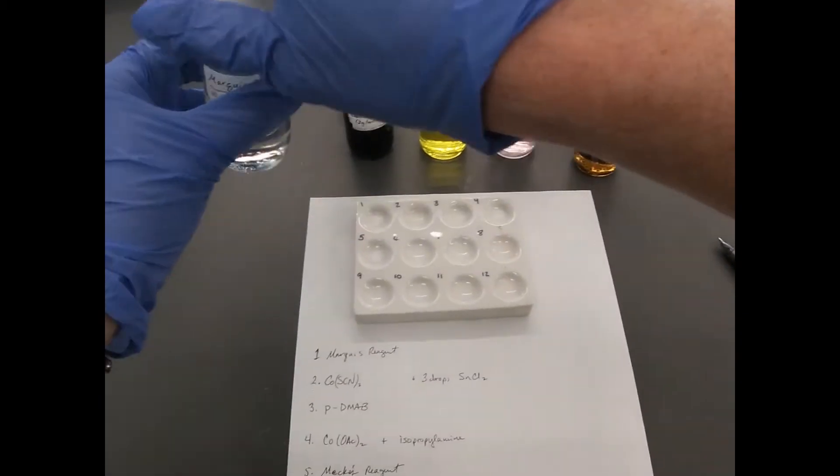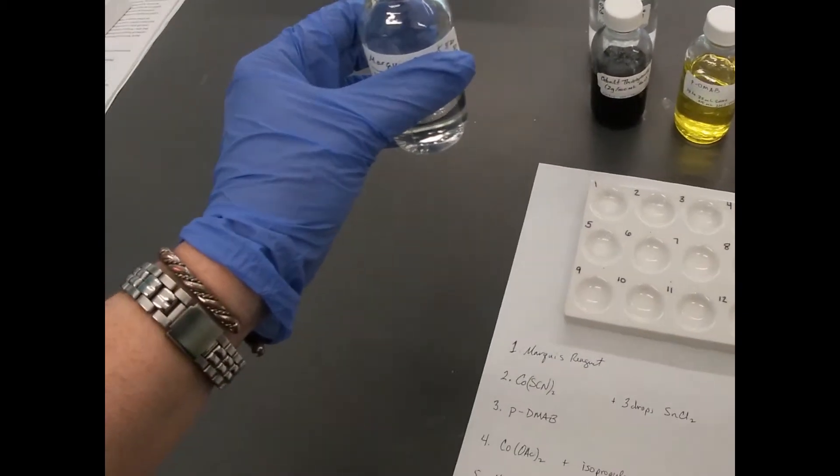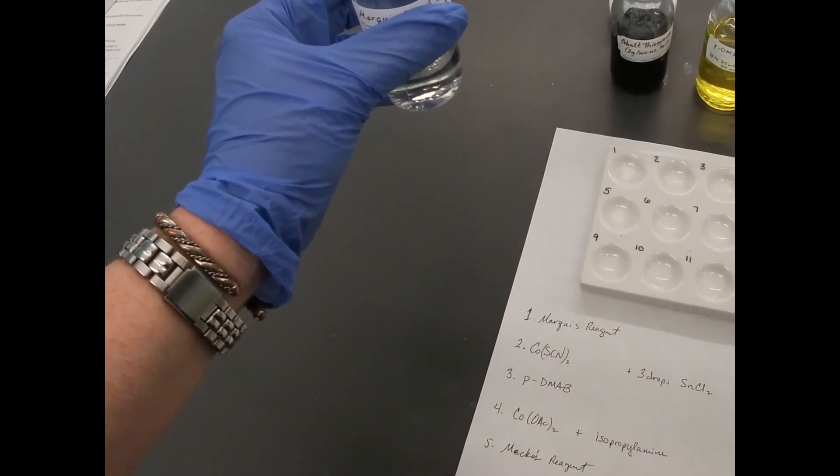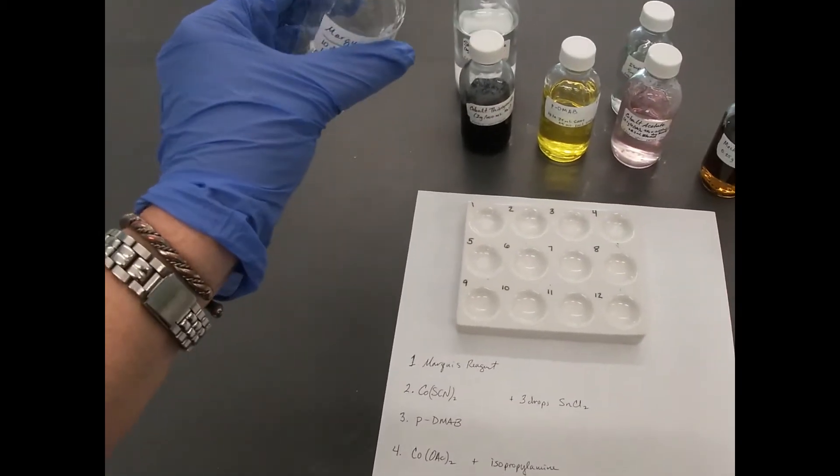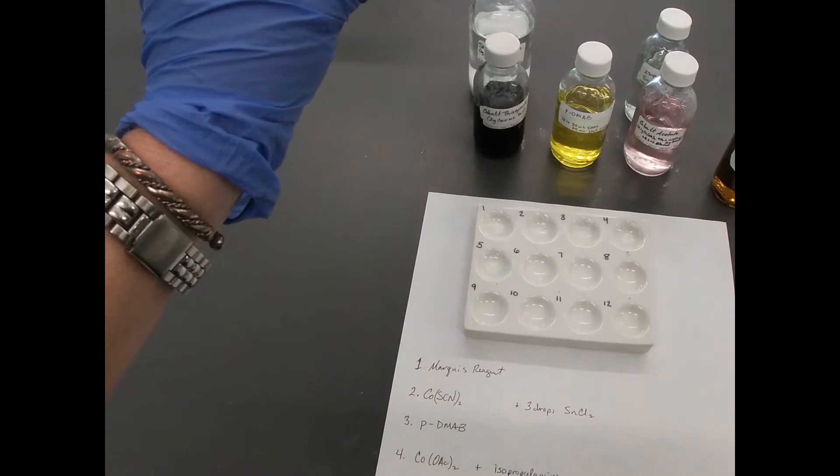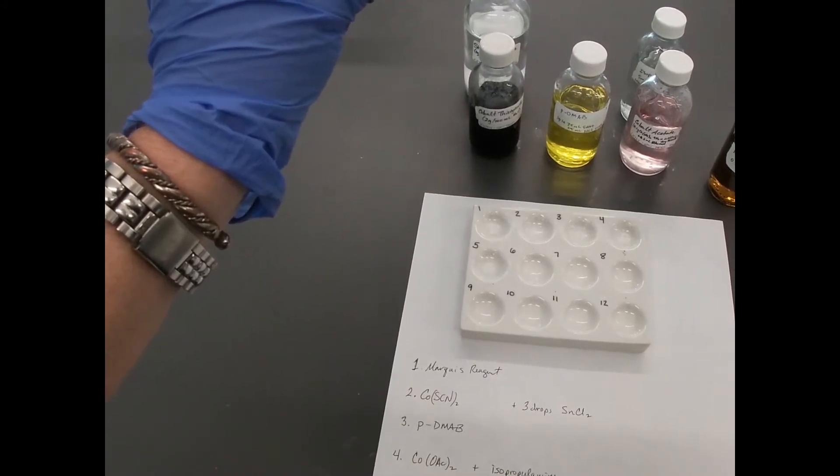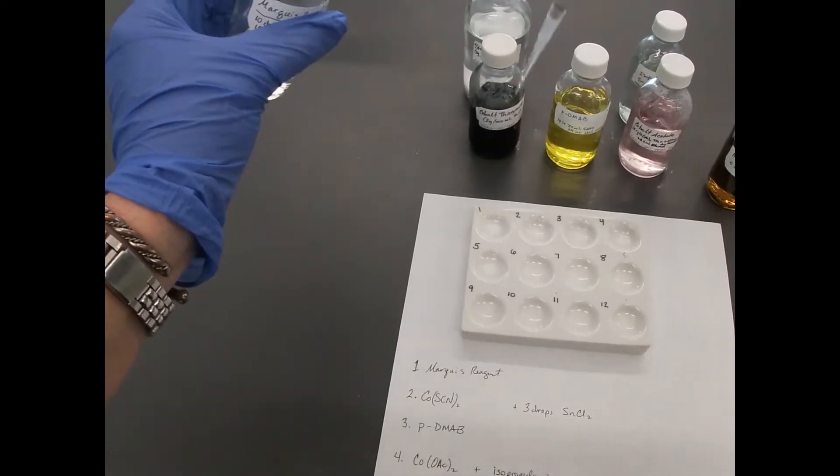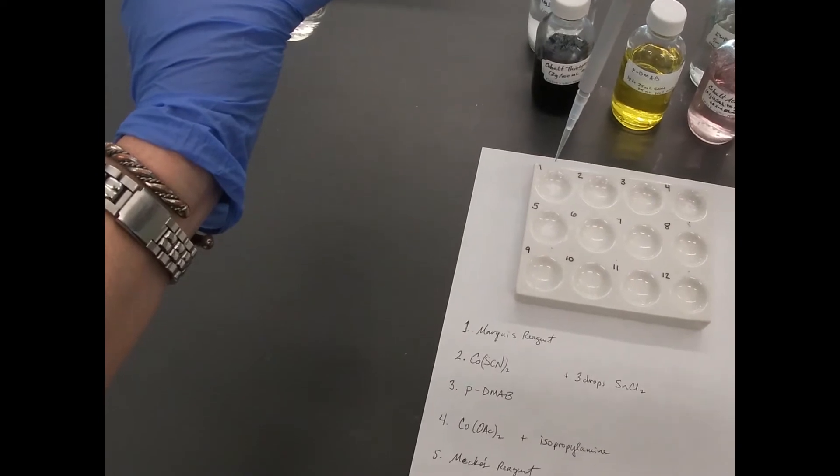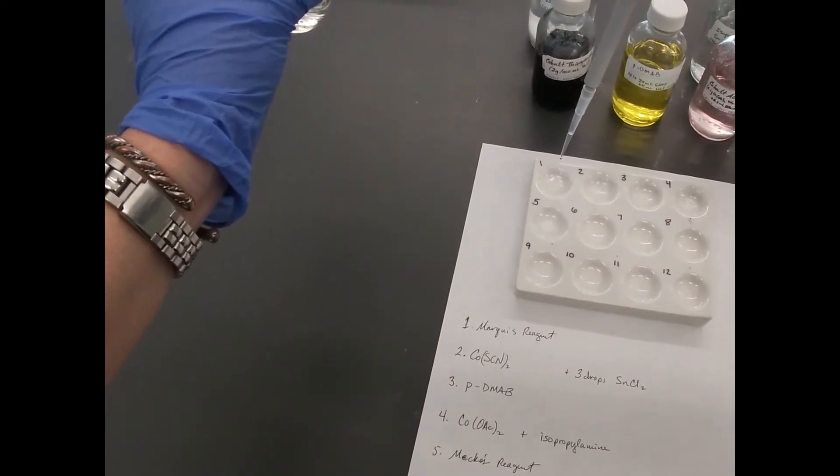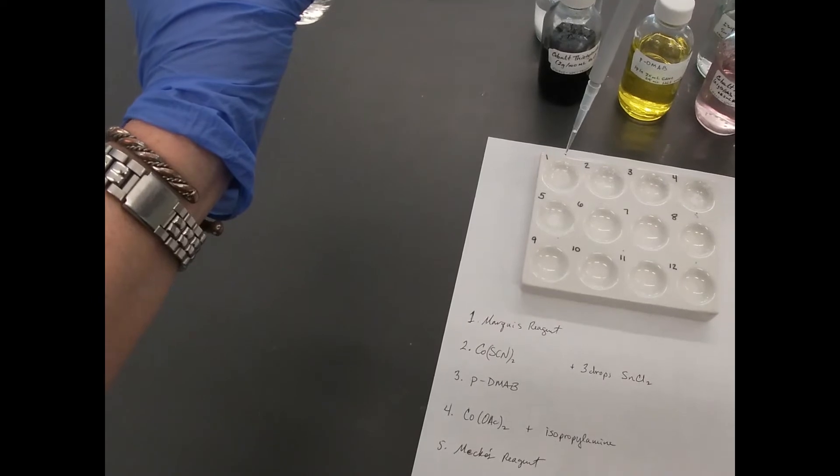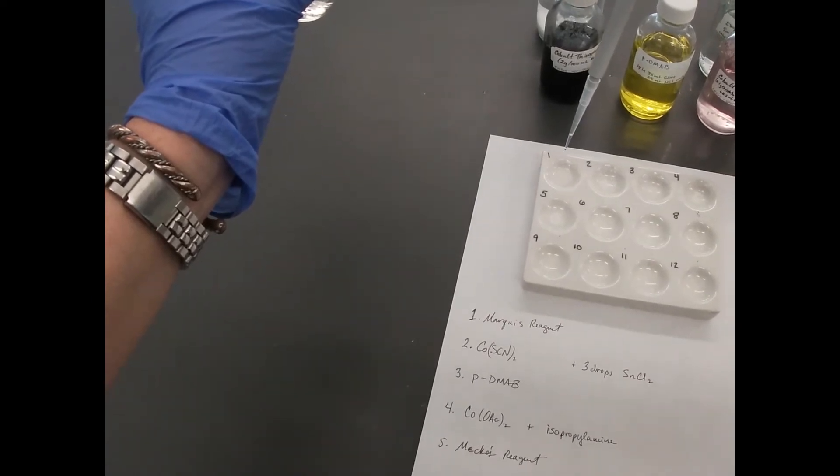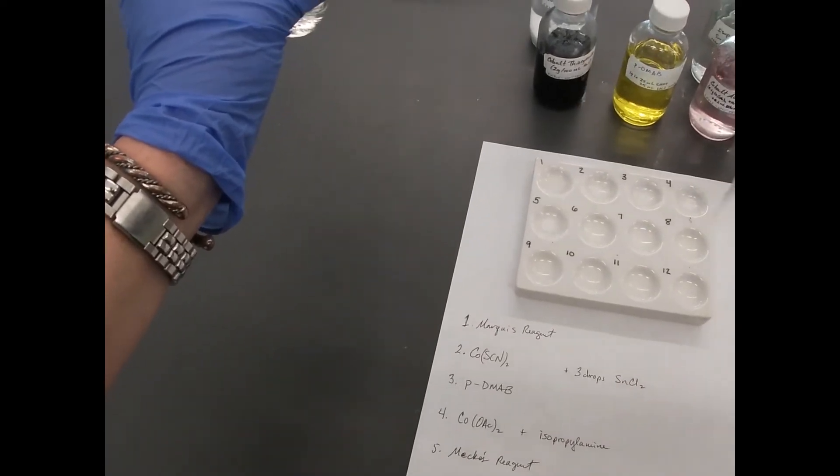So we have our marquee reagent, which tests for opium alkaloids. I'm taking about 100 microliters and adding 10 drops to well number one.